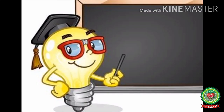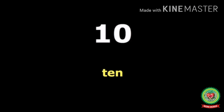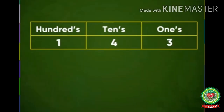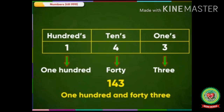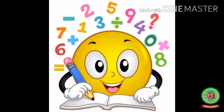Now let's recall what we have done today. First, we revised number names from 1 till 100. Then, we wrote the place value chart for 3-digit numbers. And at last, how to write a 3-digit number in words. I hope you all understood. So open your precise maths book and do the related sums. Thank you, have a nice day.